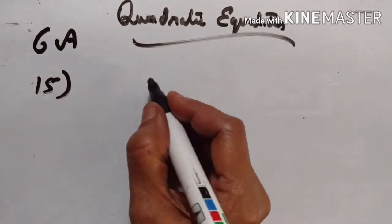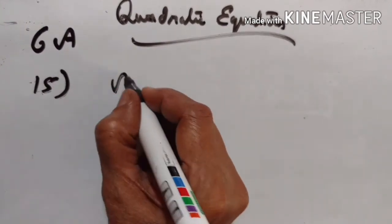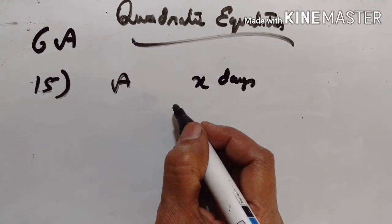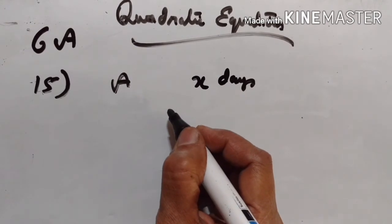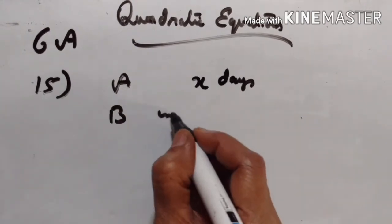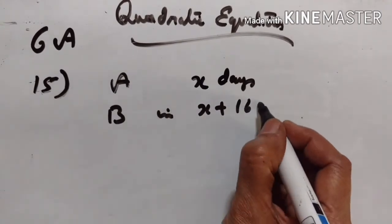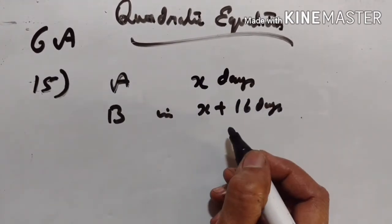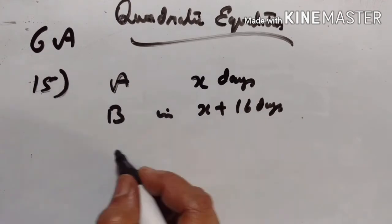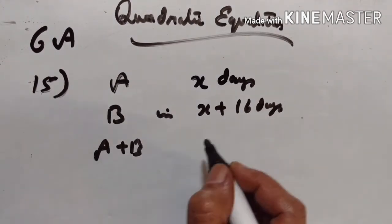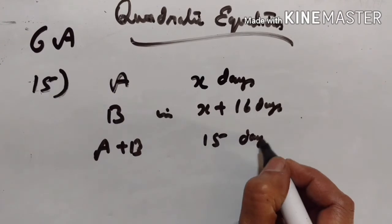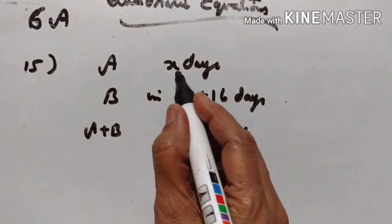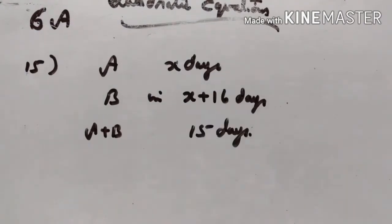Problem 15: A can do a piece of work in x days. B can do the same work in x plus 16 days. If both working together can complete it in 15 days, we have to calculate x.